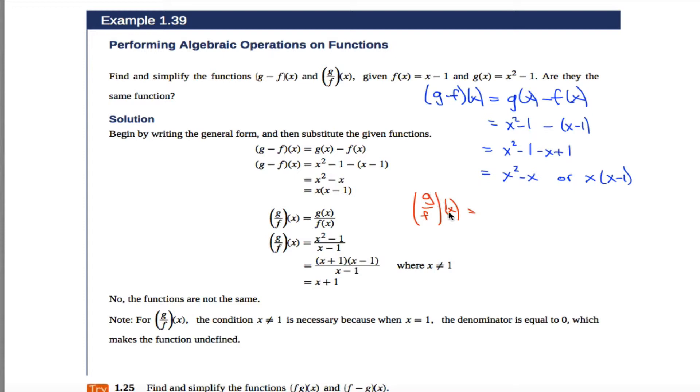What you need to know is when you see something written like this, that means g of x divided by f of x. That's what this notation means. This is one machine, but it's defined in terms of the machine g of x and the machine f of x. So I can rewrite it in terms of these two machines. And then g of x is given to me to be x squared minus 1. And f of x is given to me to be x minus 1.